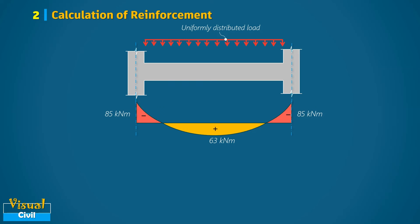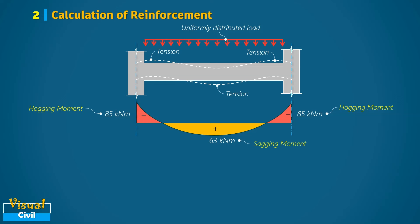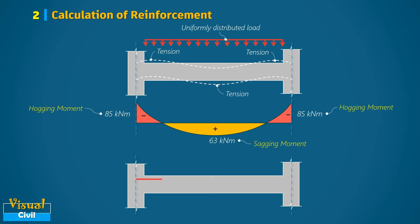At the support, tension occurs at the top due to the hogging moment. At the mid span, tension occurs at the bottom due to the sagging moment. Consequently, we need to provide reinforcement to resist tension at the top of the beam at the support and at the bottom at mid span.